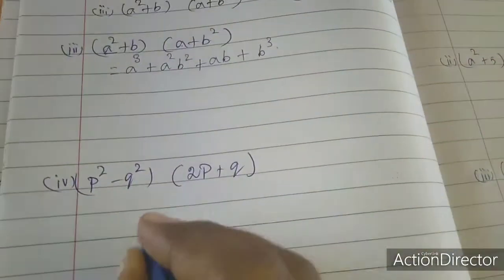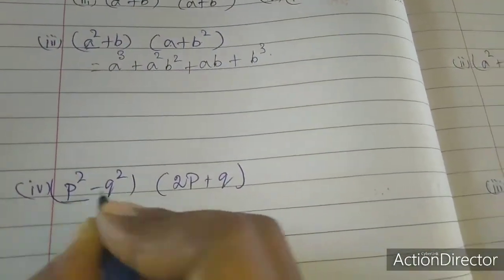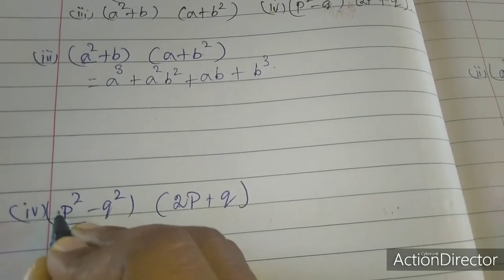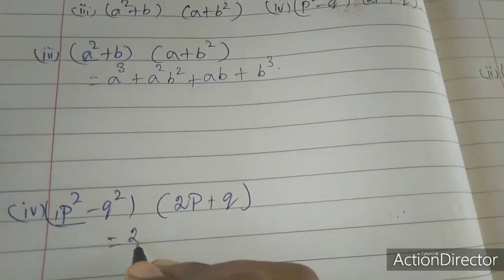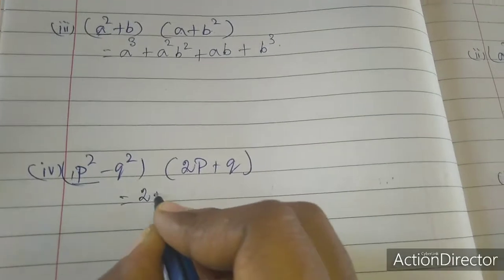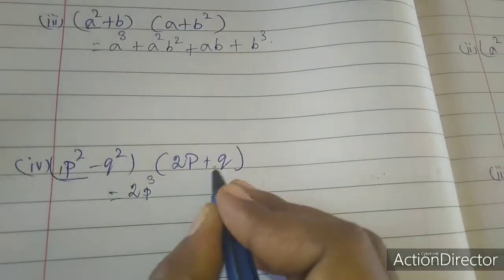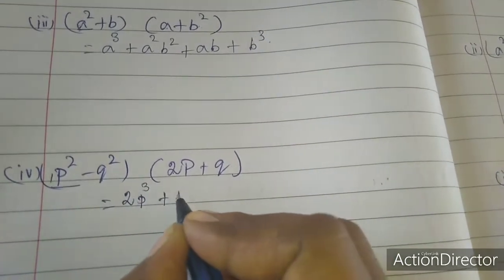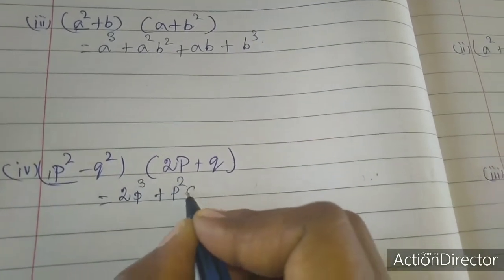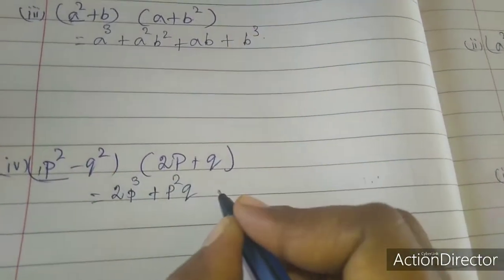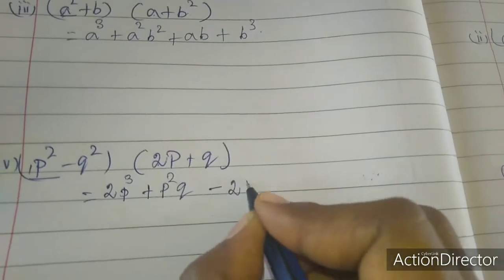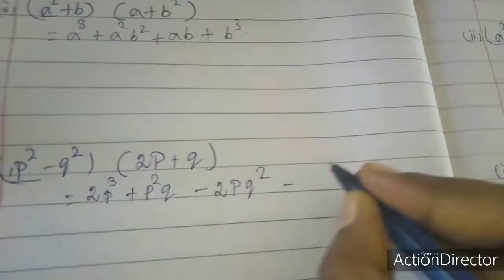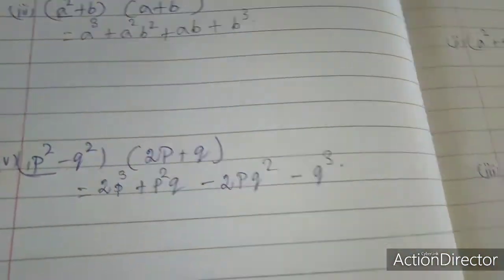Now the fourth sum: first I am going to multiply with b squared. Here the coefficient is 1, so 1 into 2 is 2. b squared into b gives b cubed. Next, plus 1 only to keep, so b squared into q. Here minus 2b times q squared. Here minus q into q squared. That's all - second sum is completed.